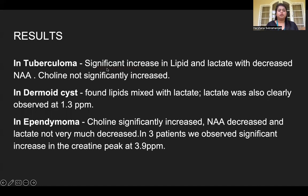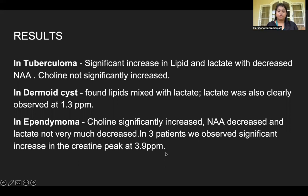Coming to the results: in tuberculosis, we observed a significant increase in lipid and lactate with decreased NAA. Choline was not significantly increased. In demyelinating disease, lipids mixed with lactate peak were seen and lactates were also clearly observed at 1.3 ppm. In ependymoma, choline was significantly increased, NAA decreased, and lactate was not very much increased. In three patients, we observed a significant increase in the creatine peak at 3.9 ppm.